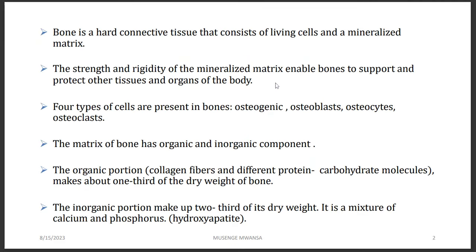Bone is a hard tissue that consists of living cells and a mineralized matrix. Apart from the living part, it also has a non-living part, which is the matrix. The strength and rigidity of this mineralized matrix enables bone to support and protect other tissues and organs. Because it has been mineralized, meaning it is hard, it is able to support and protect other tissues and organs.